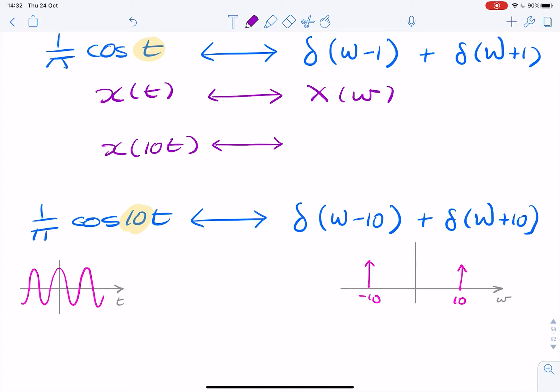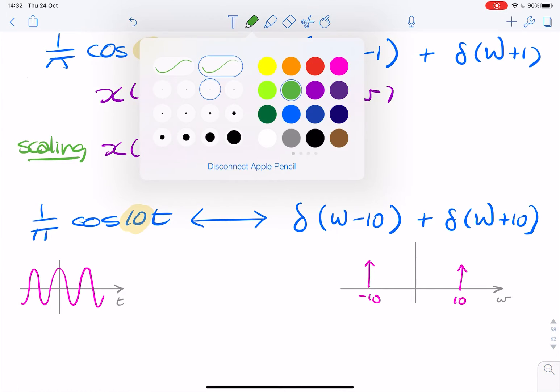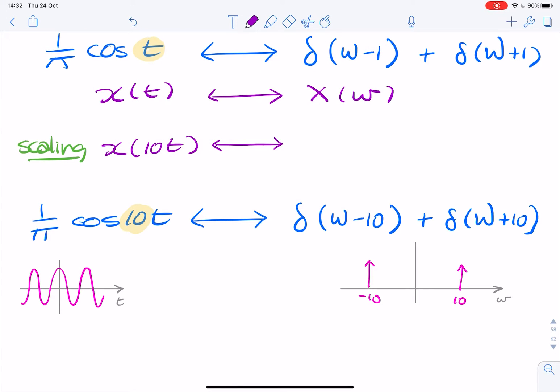And that is scaling. And the question is, why can't we use the scaling property? Because surely the scaling property of the Fourier transform would dictate that we had x of omega over 10. So that's what we would expect if we were to use the scaling property.